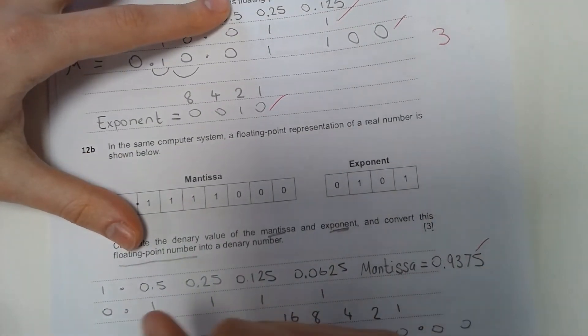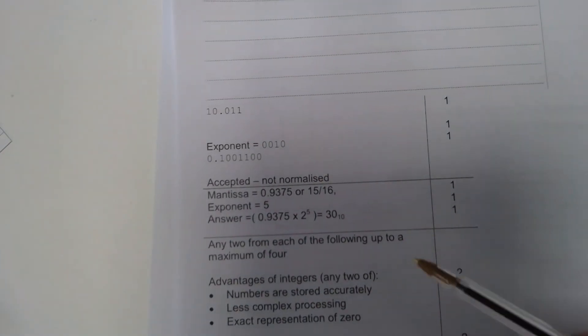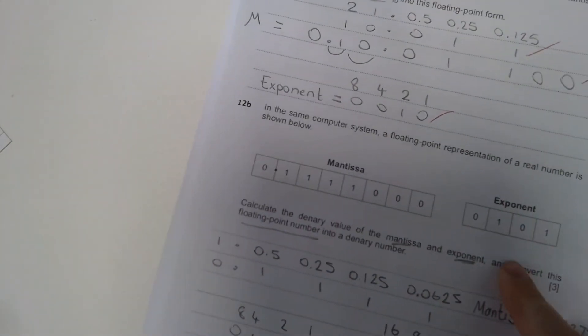So there we go. We could even specify what base it is in. So for the mantissa, we could say base 10, just to make it nice and clear that that's a value in denary form.